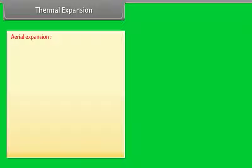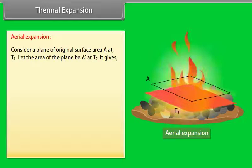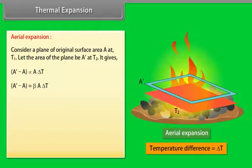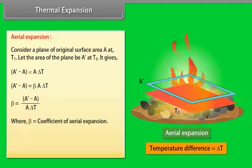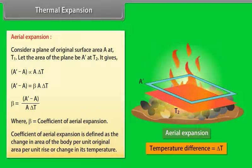Aerial expansion: Consider a plane with original surface area A at temperature T1, and let the area become A' at temperature T2. The change in area is directly proportional to the original area and the change in temperature: A' − A = βAΔT. The coefficient of aerial expansion β = (A' − A)/(AΔT). It is defined as the change in area per unit original area per unit rise in temperature.